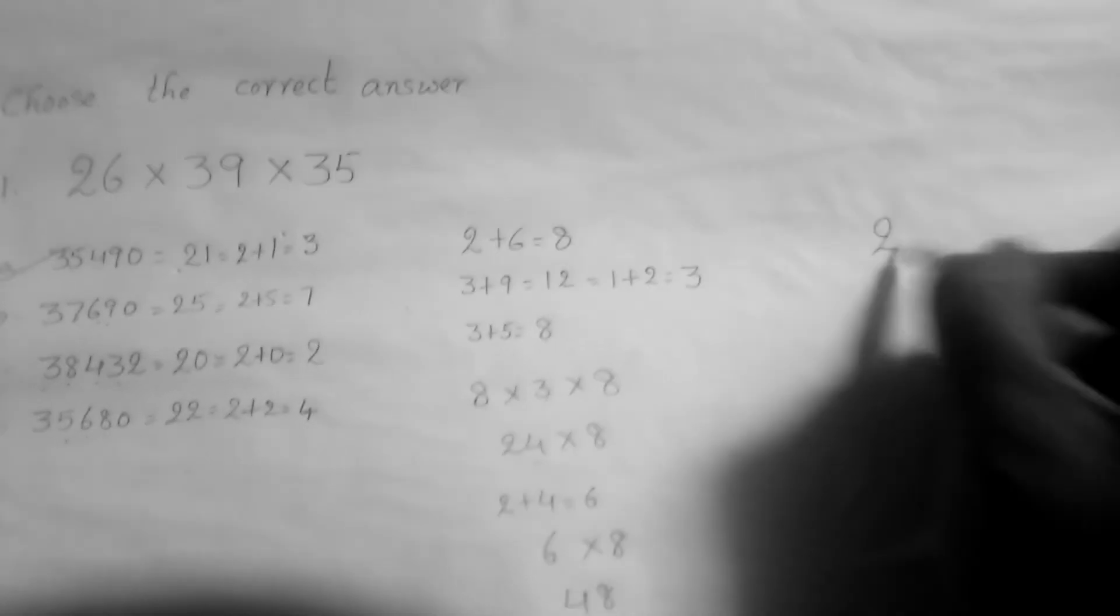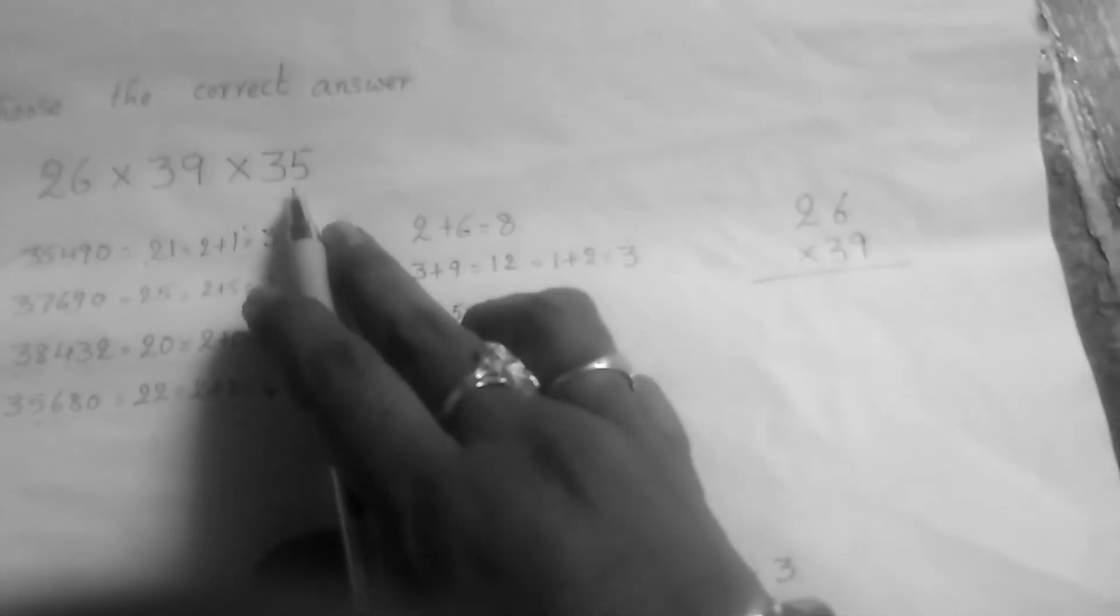You have to check if you have any doubt. Please check what numbers we have to multiply first. 26 into 39, and after that we have to multiply with 35.